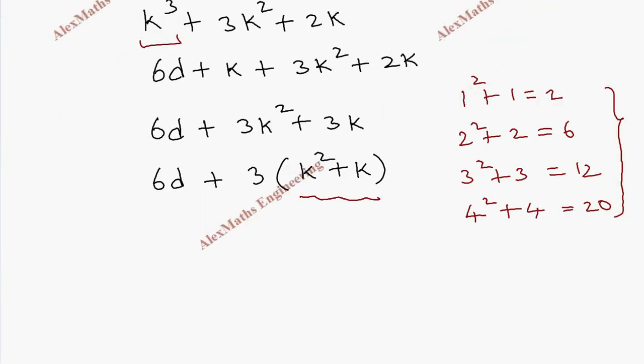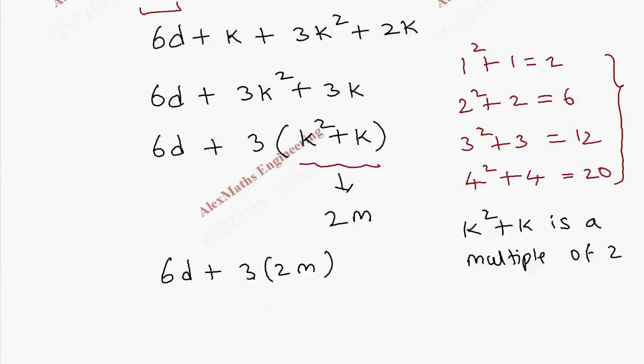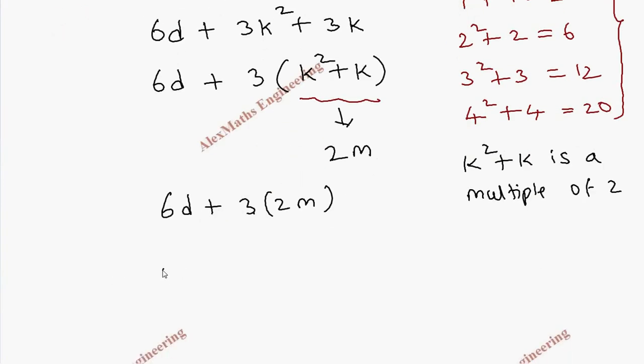So we can replace this expression as 2 times some constant m. So we get 6d + 3 into 2m. Here we can say k² + k is a multiple of 2, so we can say it is 2 times some constant. So finally we get 6d + 6m, and when 6 is taken common we get d + m.